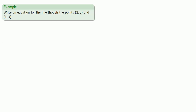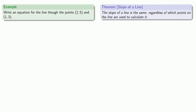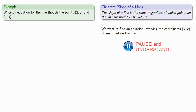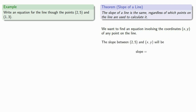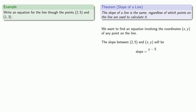So how can we use this result? Let's try to write the equation of a line through two given points. We want to find an equation involving the coordinates of any point on the line. One thing we can note is that the slope between a known point and any point (x, y) on the line will be the difference in the y-values, y minus 5, over the difference in the x-values, x minus 2.